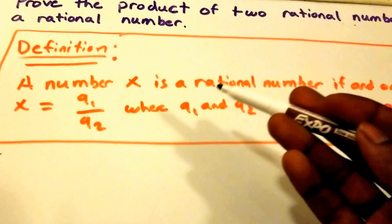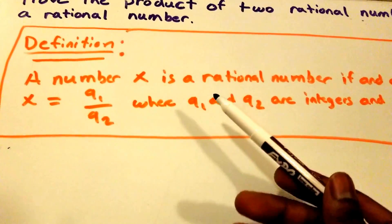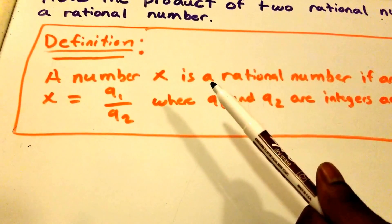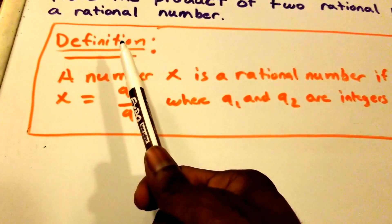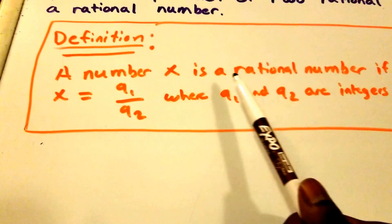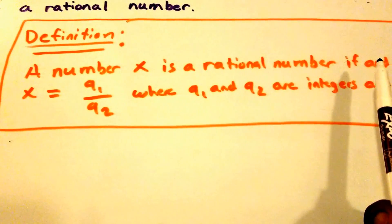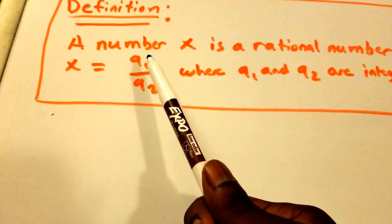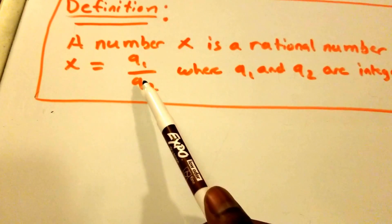In the orange rectangle I have the definition of what it means for a number to be a rational number. So here we have the definition that says a number that we're going to call x is a rational number if and only if x equals q subscript 1 divided by q subscript 2.